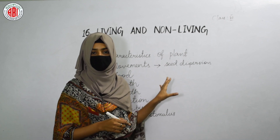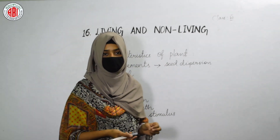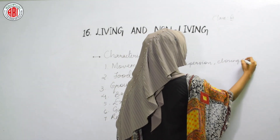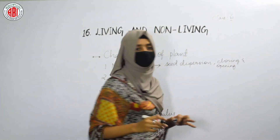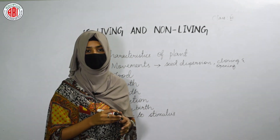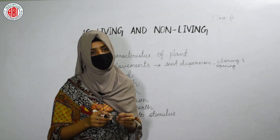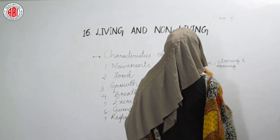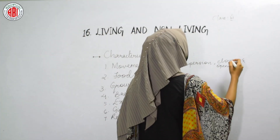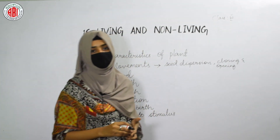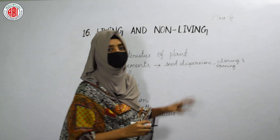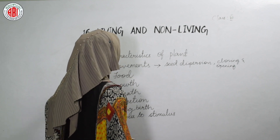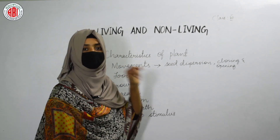Besides seed dispersion, there are other movements seen in plants, like the closing and opening of stomata and even of flowers. In some plants, closing and opening of flowers takes place. Stomata are tiny pores present on the leaf surface that also close and open. In this way, different movements can be observed in plants, and by this characteristic feature we can call the plant a living thing.